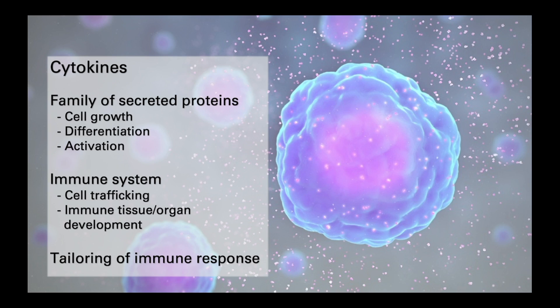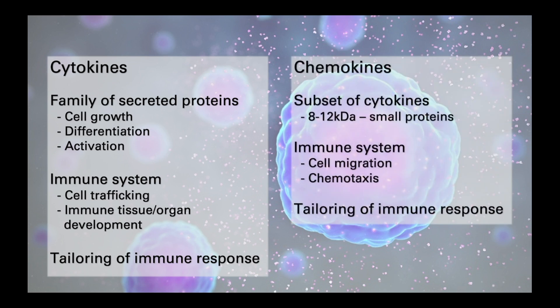Importantly, the type of agent that initiated the immune response — for example, a bacteria, a virus, or a fungus — will determine which cytokines are produced, and therefore help ensure that there is an appropriate response to the eliciting agent. Chemokines are a subset of cytokines with the specialist function of inducing cell migration or chemotaxis, so for example, recruiting neutrophils from the blood into the tissues to the site of infection or inflammation.